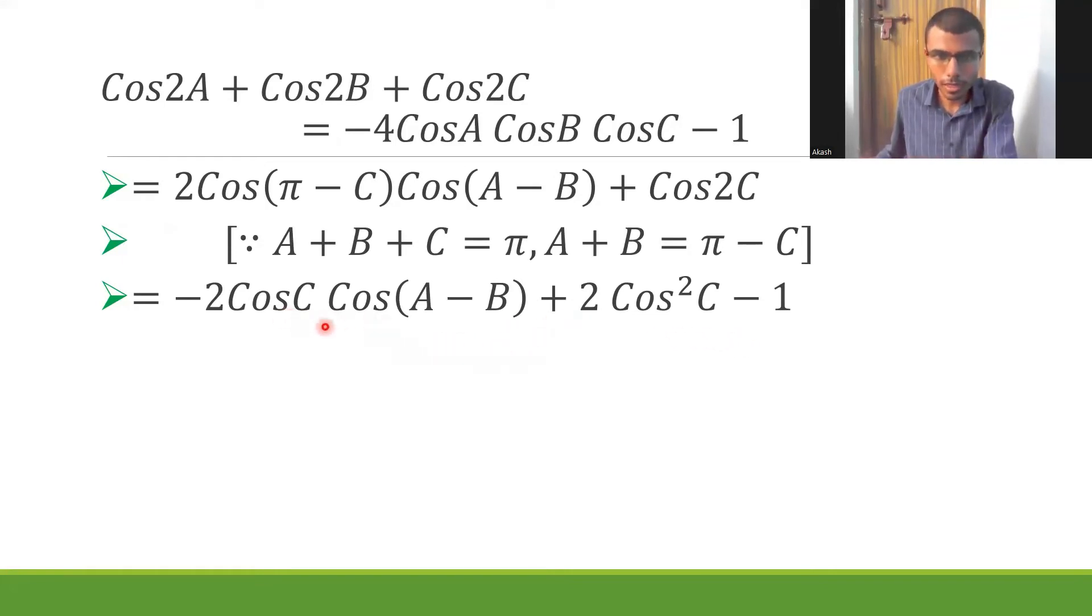In these two terms, if you'll observe, I can take -2cosC common. I can take -2cosC common because I don't want the first term to have a negative. I mean, I can just take it out. So from these two terms, I'm going to take -2cosC common. So I'd be left out, I'd be getting -2cosC.